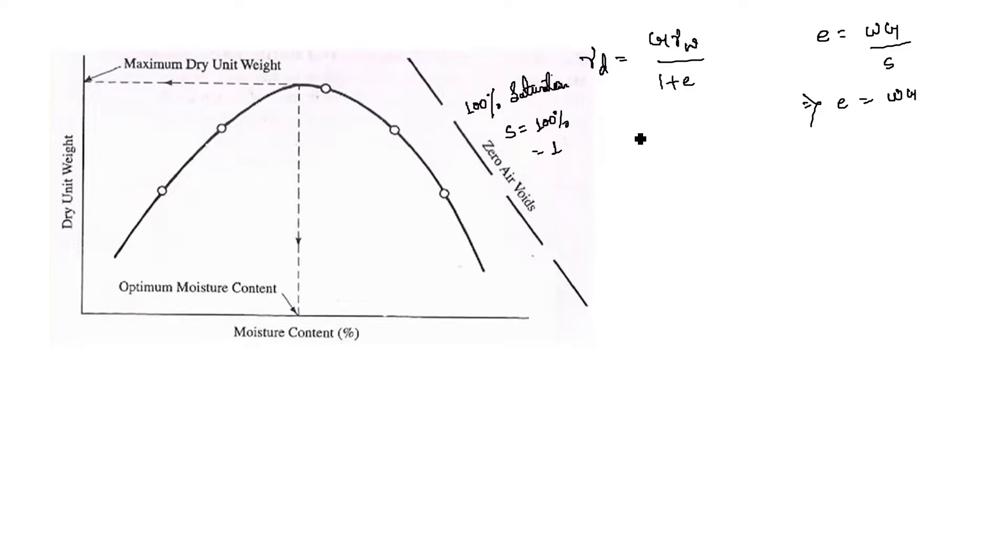So gamma D, the dry density for this condition, will be G gamma W divided by 1 plus E. The value of E is WG, where W is the water content of soil and G is the specific gravity.